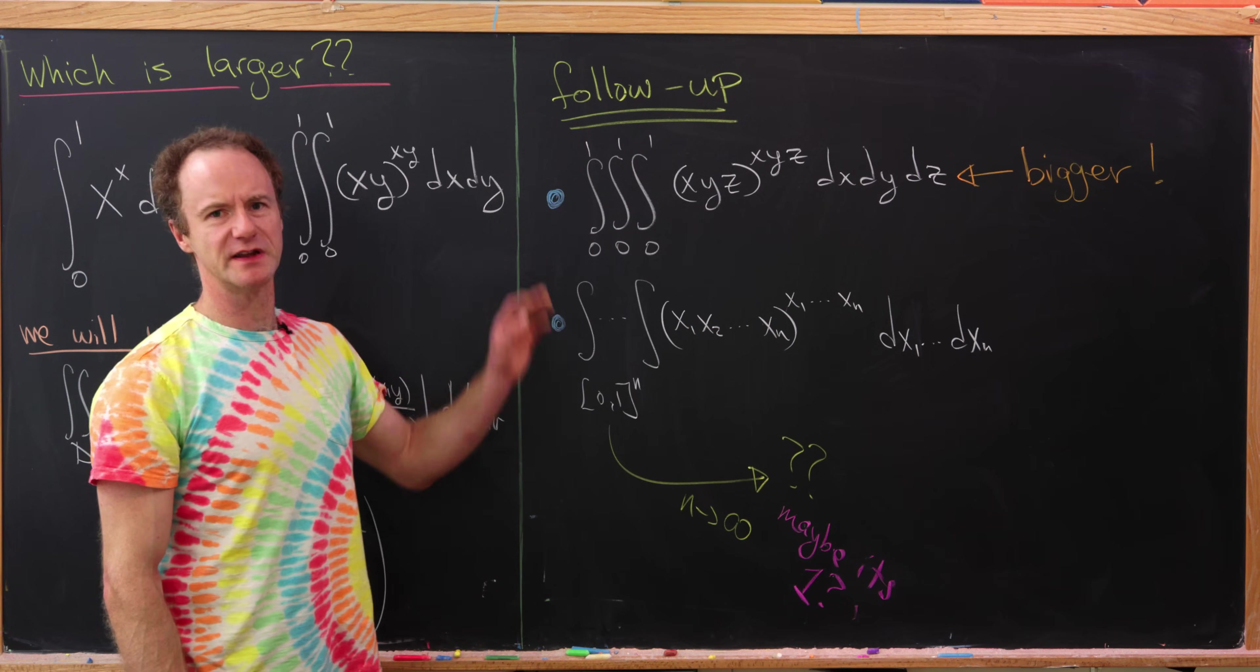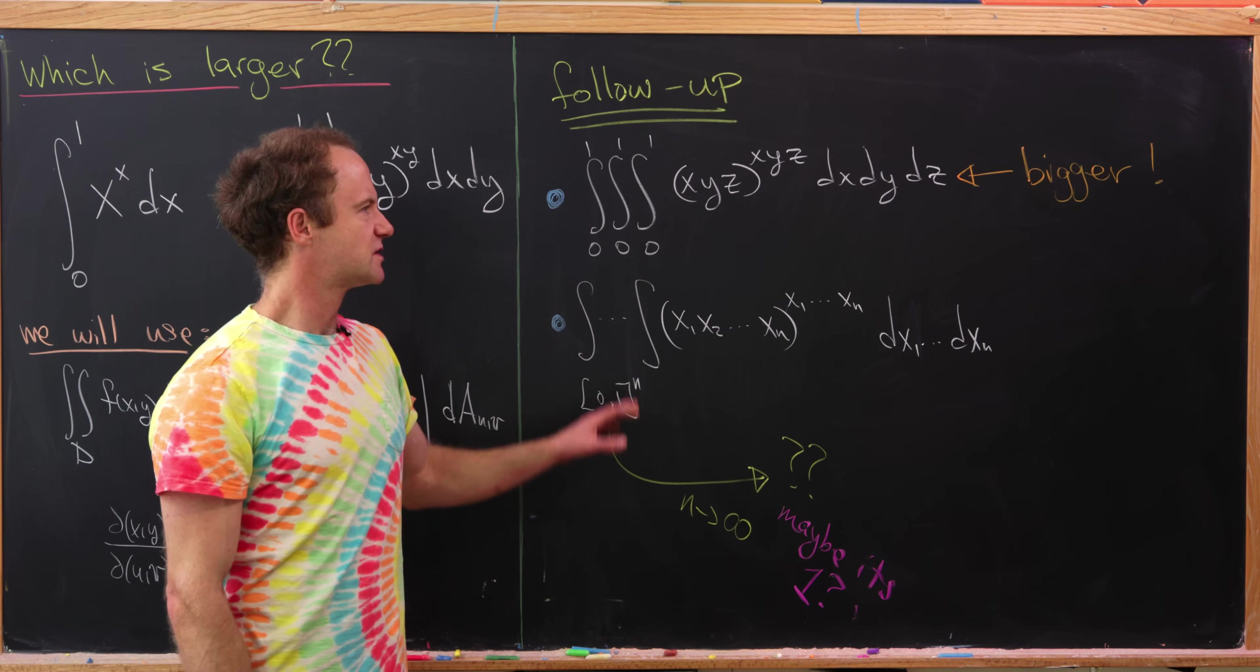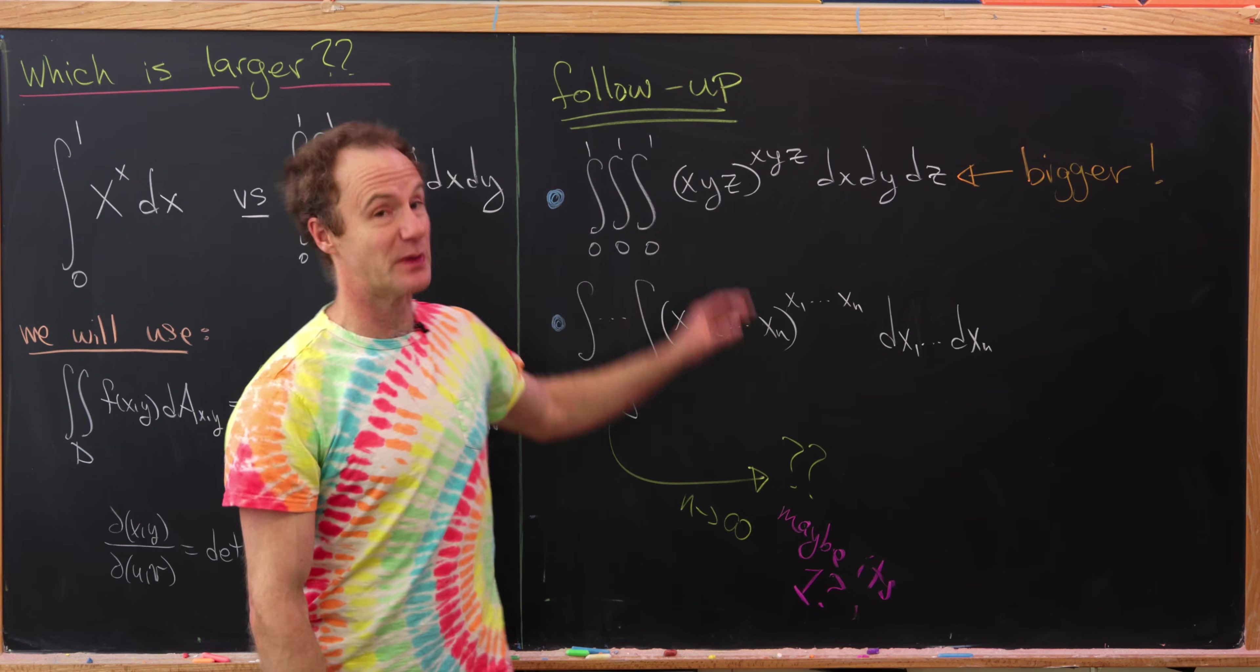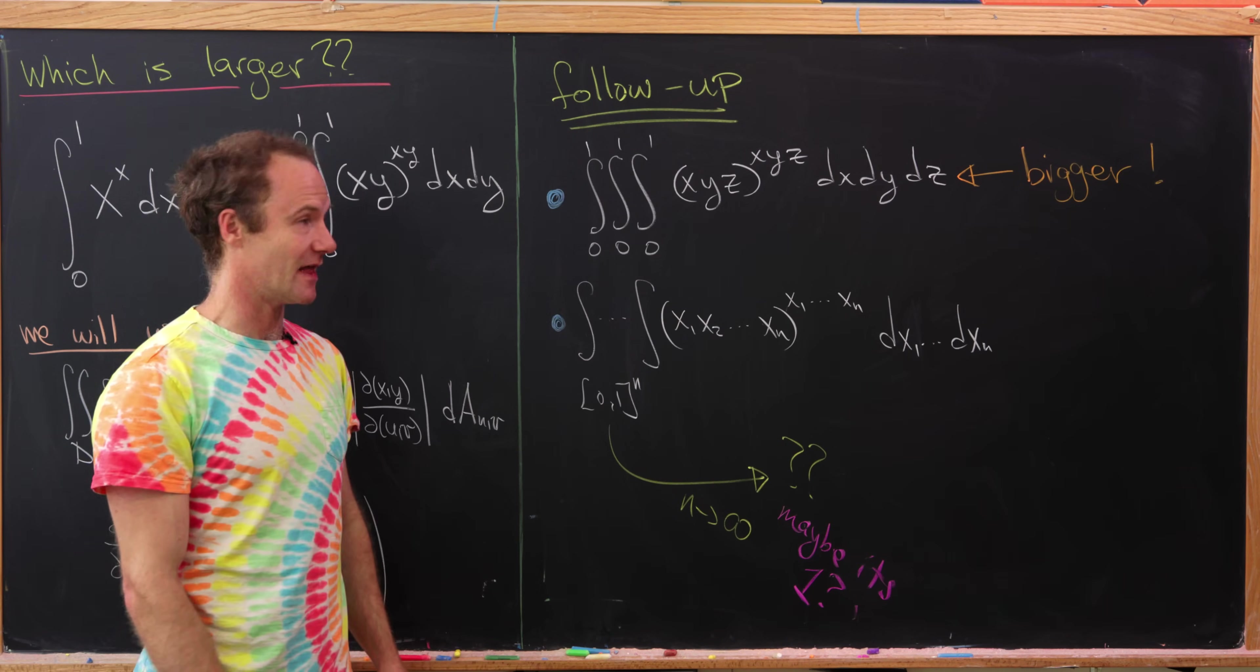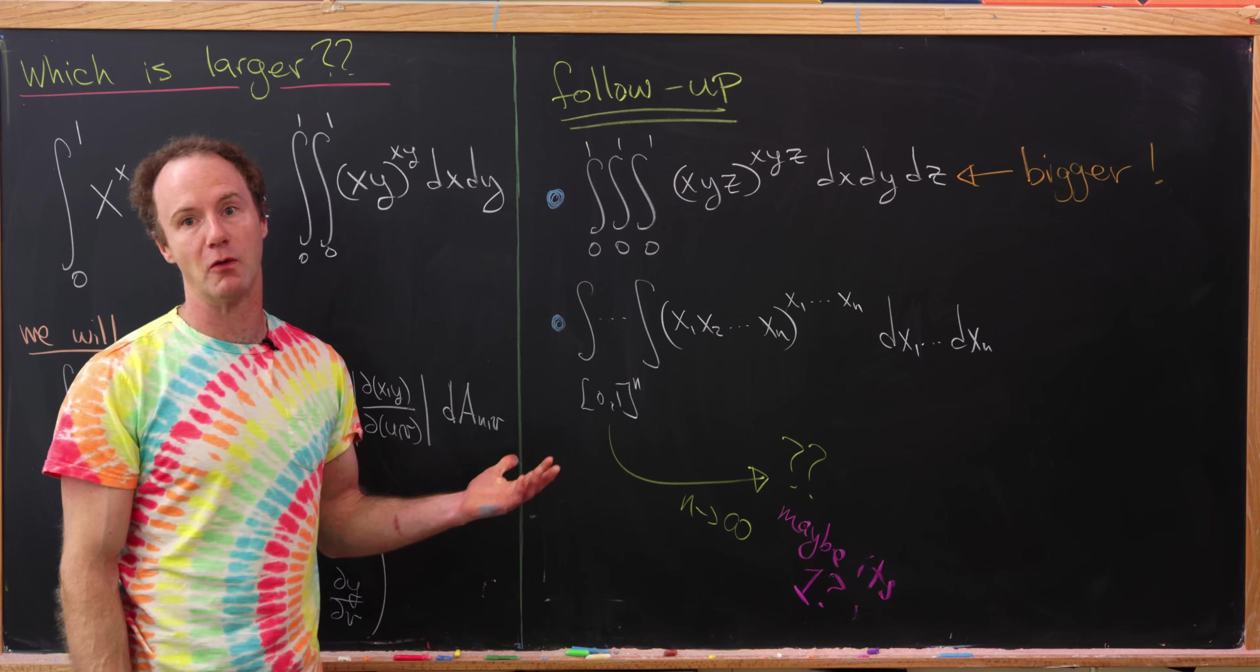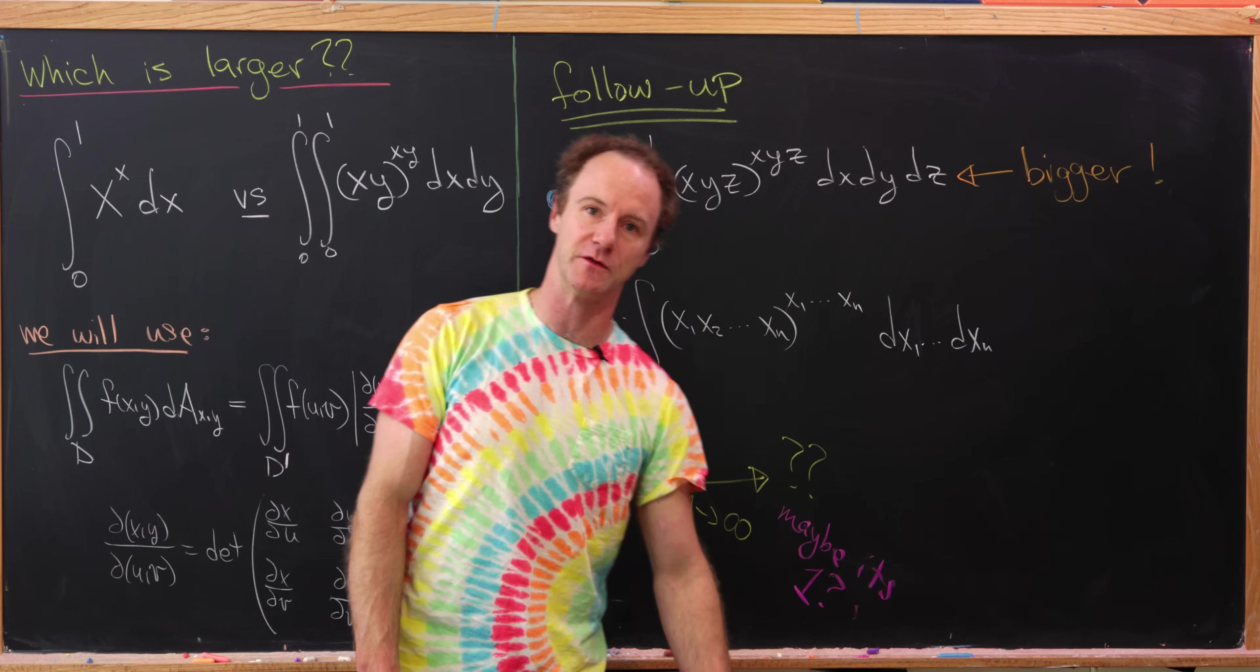What about the triple integral that also follows this pattern here? So I did the calculation in Mathematica. I didn't do it by hand. But, in fact, this is bigger than both of these. It's bigger by about 1 tenth. So a nice exercise would be, maybe not to show how much bigger it is, but to show that it is, in fact, bigger than both of these.